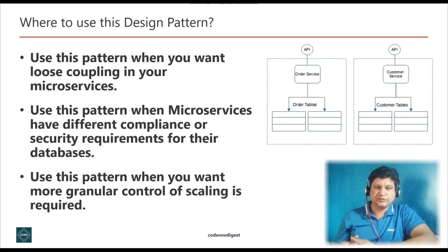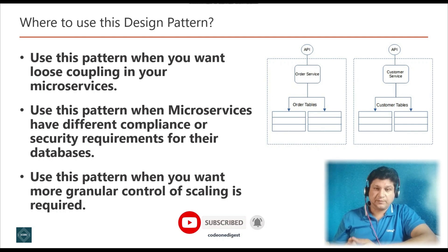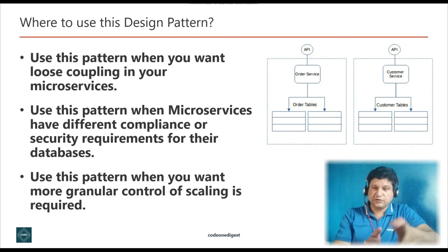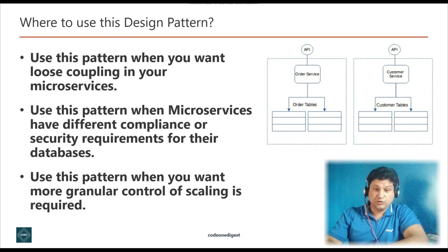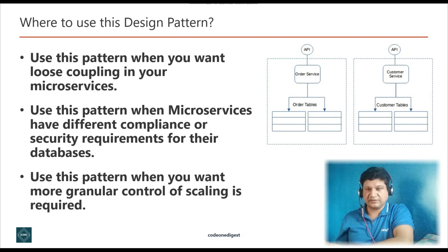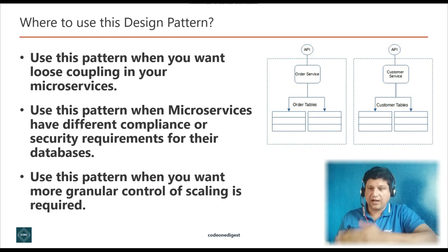Because of the ability for massive scale and high availability, NoSQL databases are getting high popularity and becoming widely used in enterprise applications. Their schema-less structure gives flexibility to development on microservices, and using this pattern gives us the flexibility to go for polyglot persistence storage. Use this pattern when you want loose coupling between your microservices. Use it when microservices have different compliance and security requirements for their databases — for example, choosing NoSQL for one microservice and RDBMS for another. Use this pattern when you want more granular control of scaling. You can independently scale up and scale down databases for different microservices, and have multiple replicas for read-heavy operations.